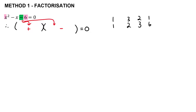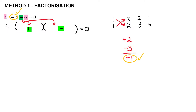Cross multiply: 1 times 2 is 2, and 1 times 3 is 3. The signs from inside the brackets are one plus and one minus. Trying that combination — plus 2 minus 3 — adds up to negative 1, which is exactly what we need in front of the x. So we have the perfect combination already.